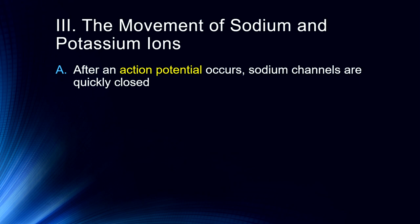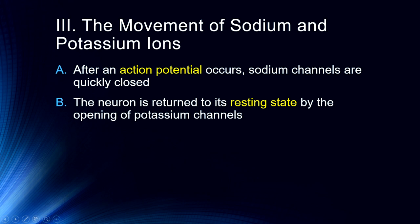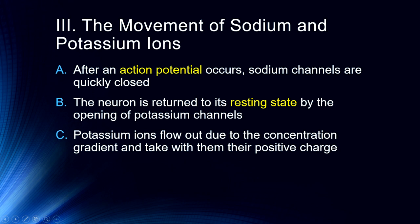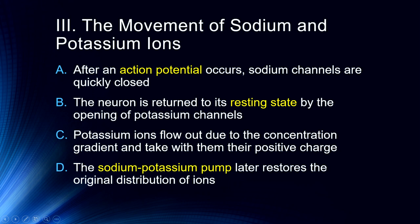The action potential occurs because sodium channels open and sodium rushes into the cell. After that, the sodium channels are quickly closed, and the neuron is returned to its resting state by the opening of potassium channels and the functioning of the sodium-potassium pump. Potassium ions flow out along the concentration gradient, taking their positive charge with them. The sodium-potassium pump then restores the original distribution of ions — getting potassium back into the cell and sodium back out. Every action potential is energy-intensive because each pump cycle requires ATP, and your brain uses a lot of it.